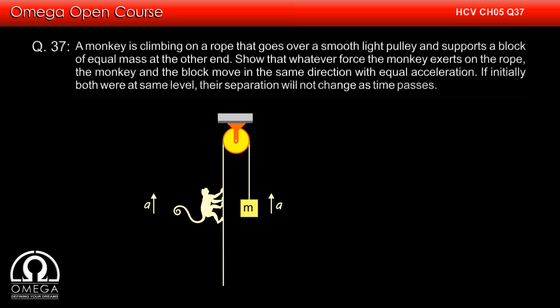Similarly, if monkey reduces its force on the rope, the tension in the rope is decreased and that decreases the upward force on the block and they both move downwards.